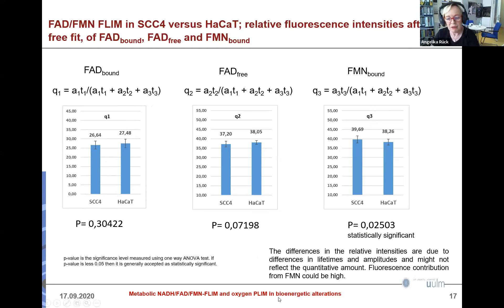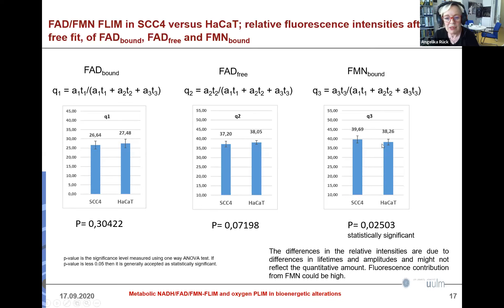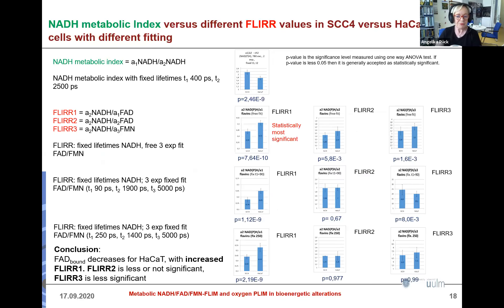We calculated the relative fluorescence intensities (Q-values) of bound FAD, free FAD, and bound FMN. Interestingly, the highest fluorescence signal in our microscopic images came from FMN — not because FMN has the highest quantity, but because of its high fluorescence quantum yield. There was also a significant difference in this FMN fluorescence intensity channel between SCC and HACAT cells.